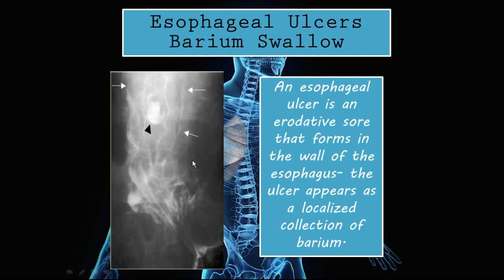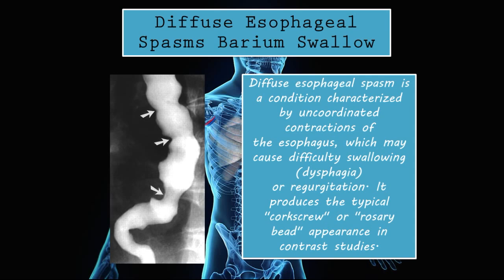The barium is not adhering well to the esophagus because of inflammation — that is esophagitis. Pointed out with the black arrowhead, you can see a collection or localization of barium, which is essentially what an esophageal ulcer looks like. Whenever you see a circular collection of barium like that, remember that it represents an esophageal ulcer.